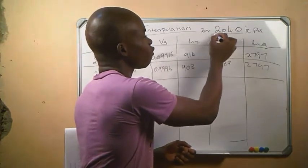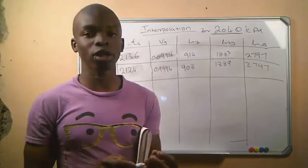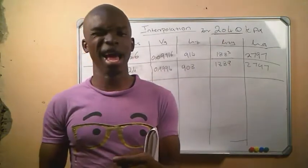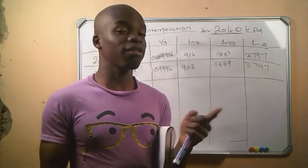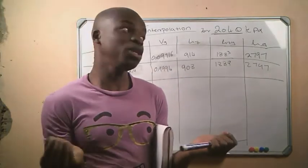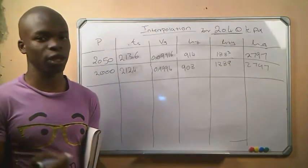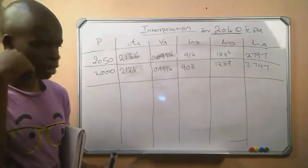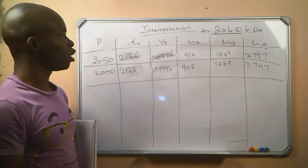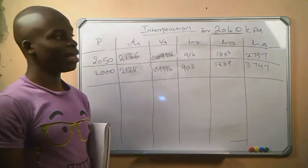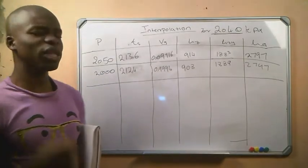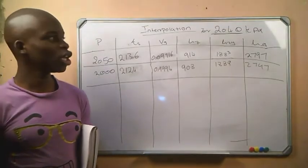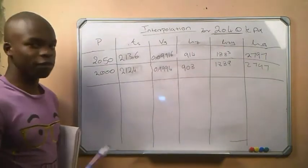Today we will be interpolating for the pressure of 2040 kPa. If you run to your steam table and try to find this pressure, I can assure you that you won't find it. But if you are given this pressure in a sentence, the correct values must be used. That's why we must interpolate — do not use the ones that are closer, that's wrong. We know that 2040 kPa is not in the steam table, but 2040 kPa will be between 2000 and 2050 kPa.